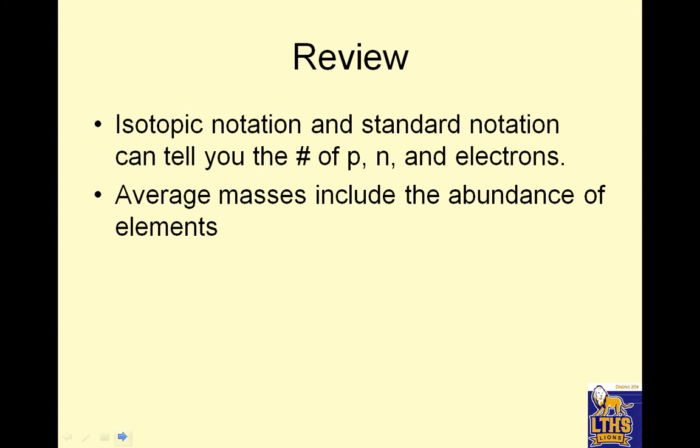Review. We are finished! Isotopic notation and standard notation can tell you the number of protons, neutrons, and electrons. Isotopic notation looks like 111 over 17. And standard notation would be the element dash 111. Average masses include the abundance of the elements. That's the percentage that it's there. And this podcast includes me saying toodles.